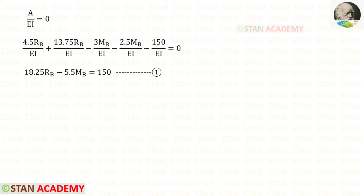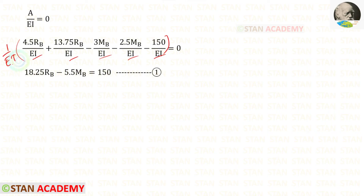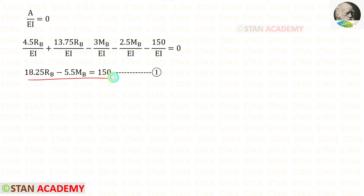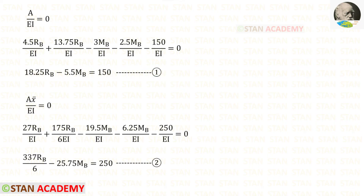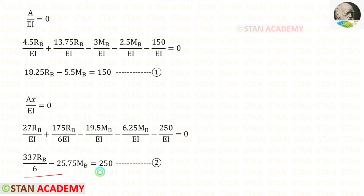We know that the sum of Area upon EI equals zero. Adding all Area upon EI values, since 1/EI is constant we take it outside, and multiplying both sides by EI gives zero. This is Equation 1. Similarly, the sum of Area × x̄ upon EI equals zero. Adding all those values gives us Equation 2.